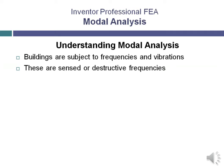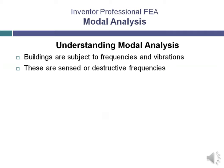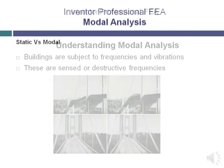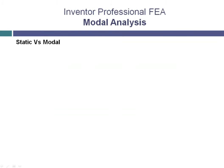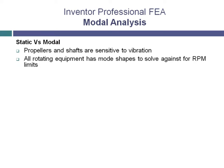In some cases, it is not the most crucial simulation to solve for because the static strength is much more important than the vibration that the part will see. Consider a propeller spinning attached to a shaft. As the propeller hits certain RPMs, the shaft is subjected to natural frequencies that may require larger diameter shafts for design RPMs to be achieved without the shaft breaking.